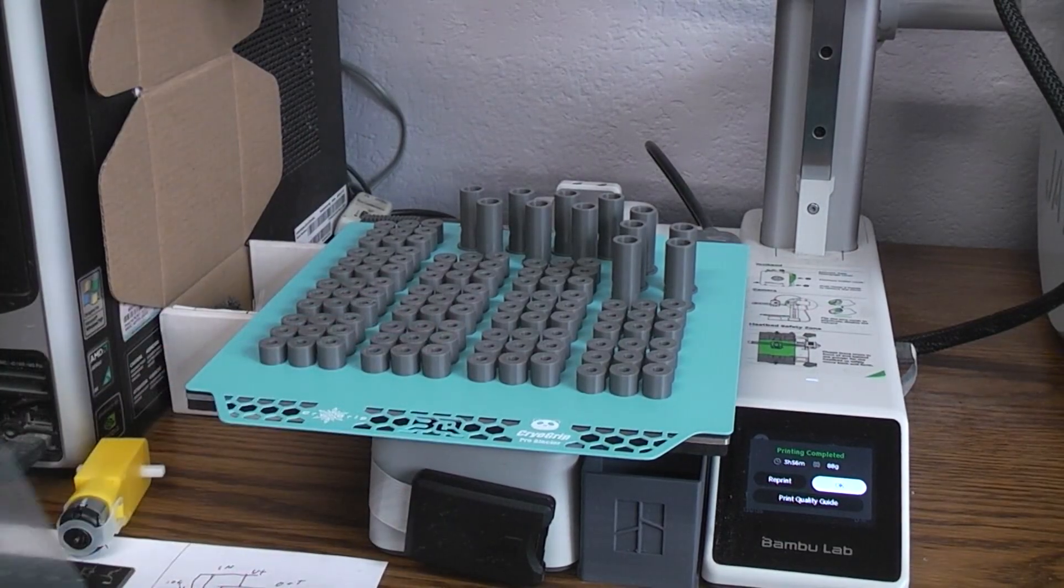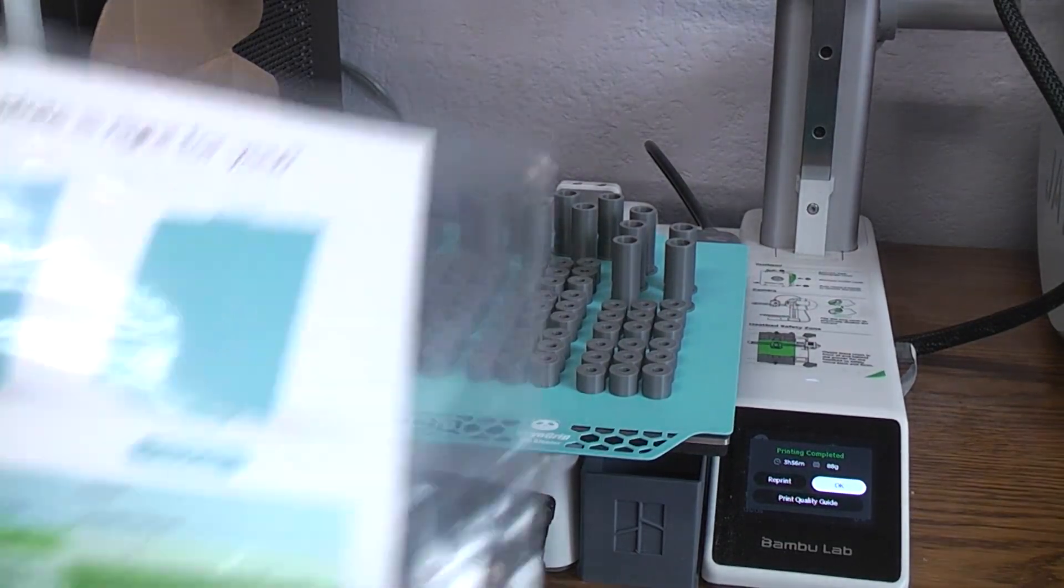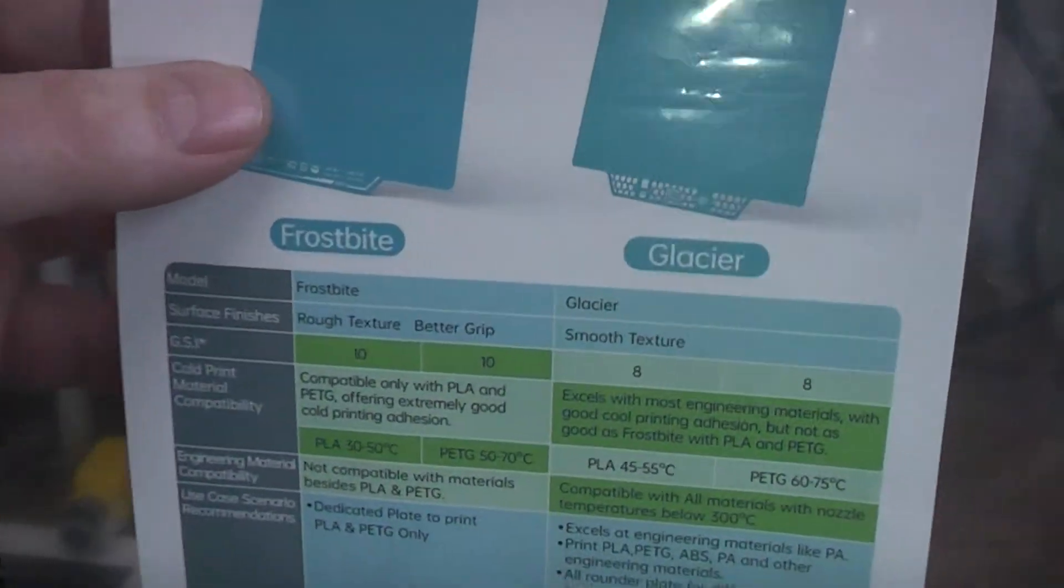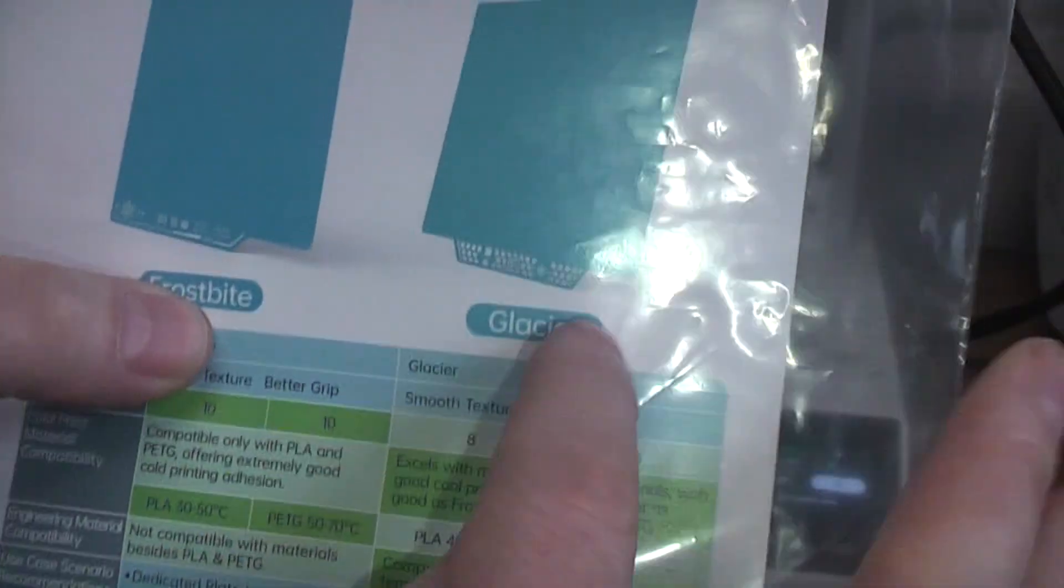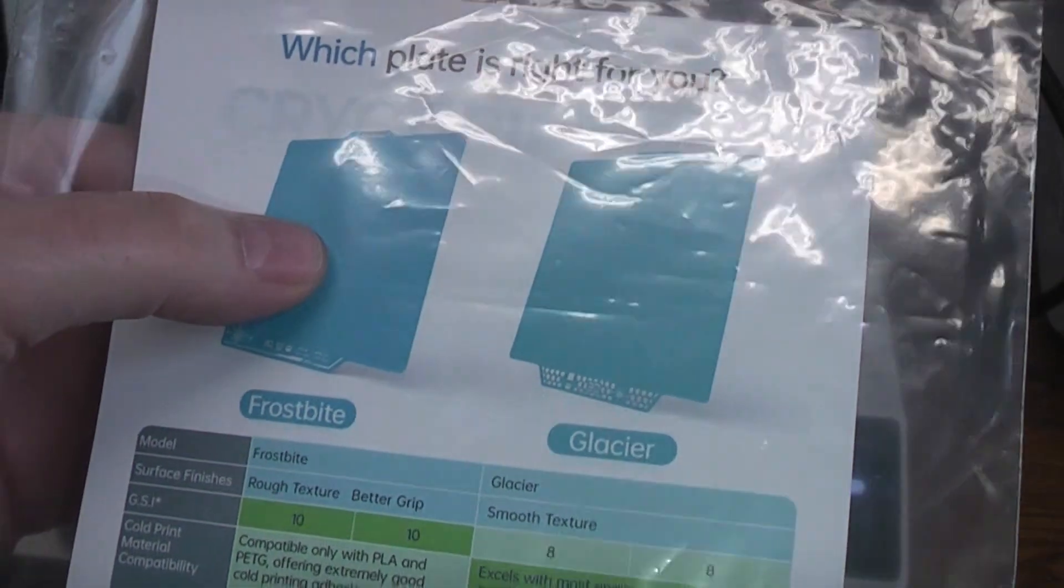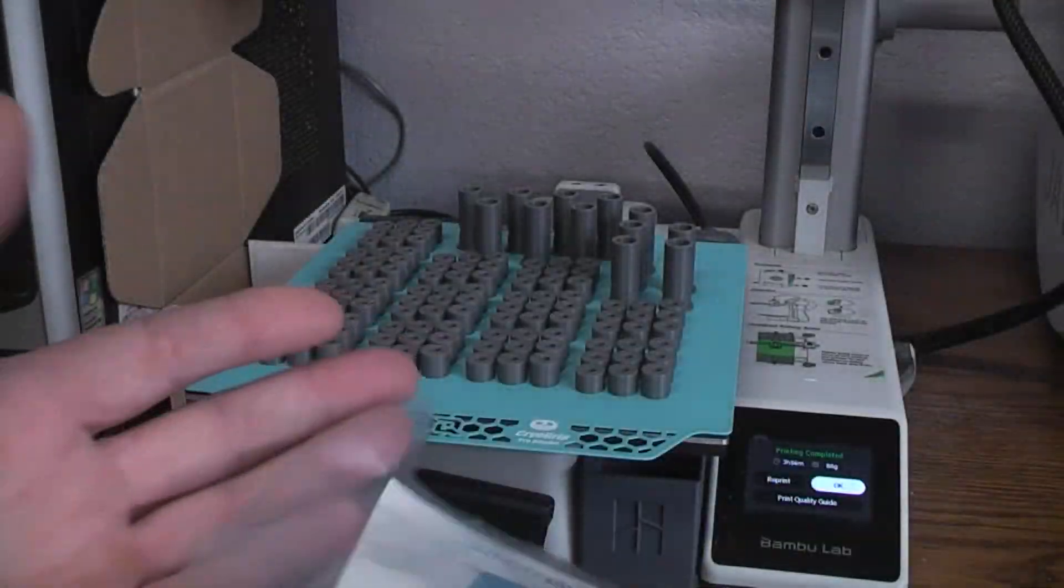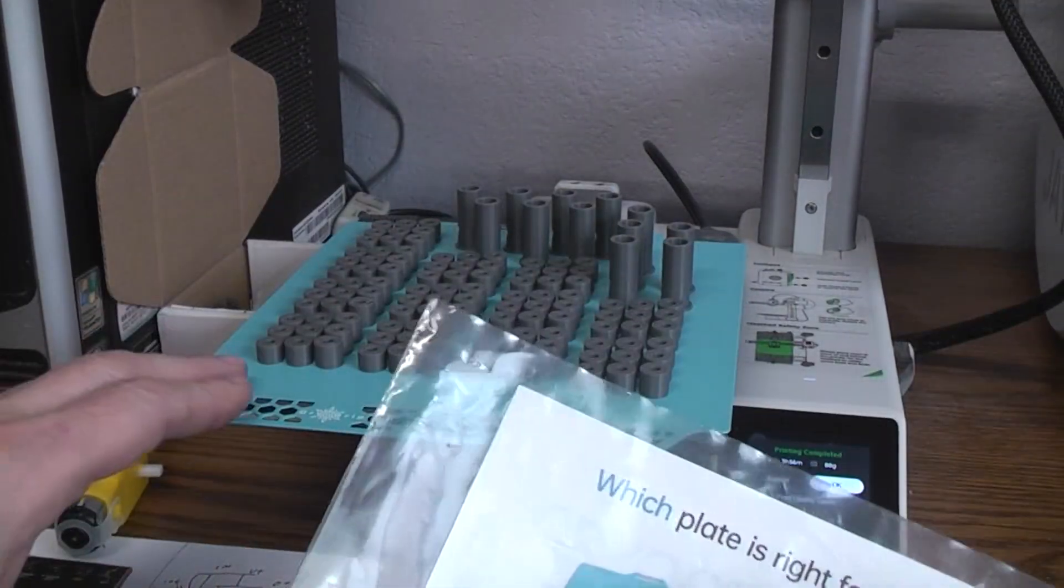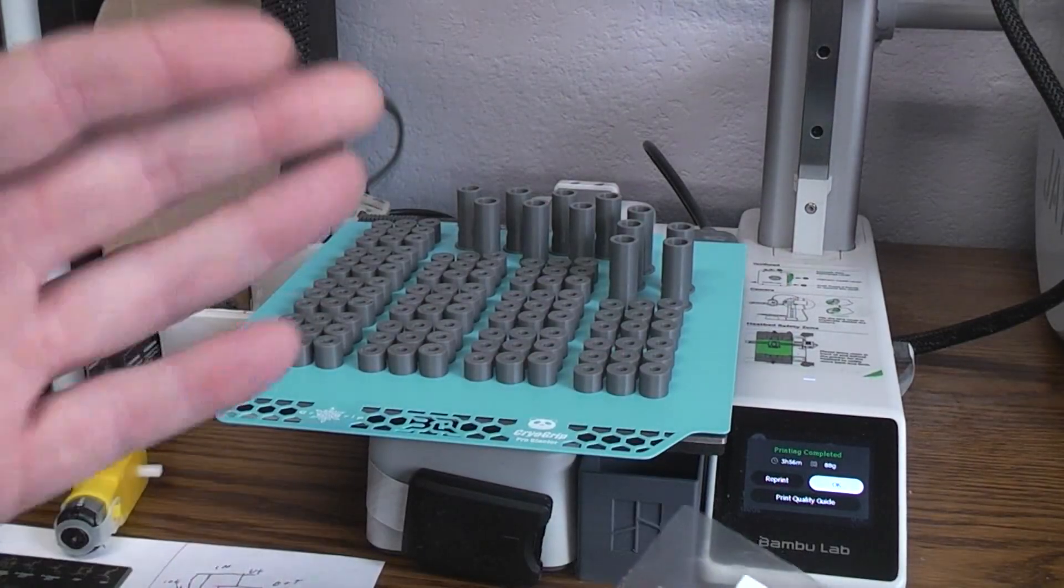It would fit the A1 mini. They have two different ones - the Frostbite and the Glacier. The Frostbite is supposed to have the best grip if all you're printing is PLA and PETG, but it has the roughest texture surface.